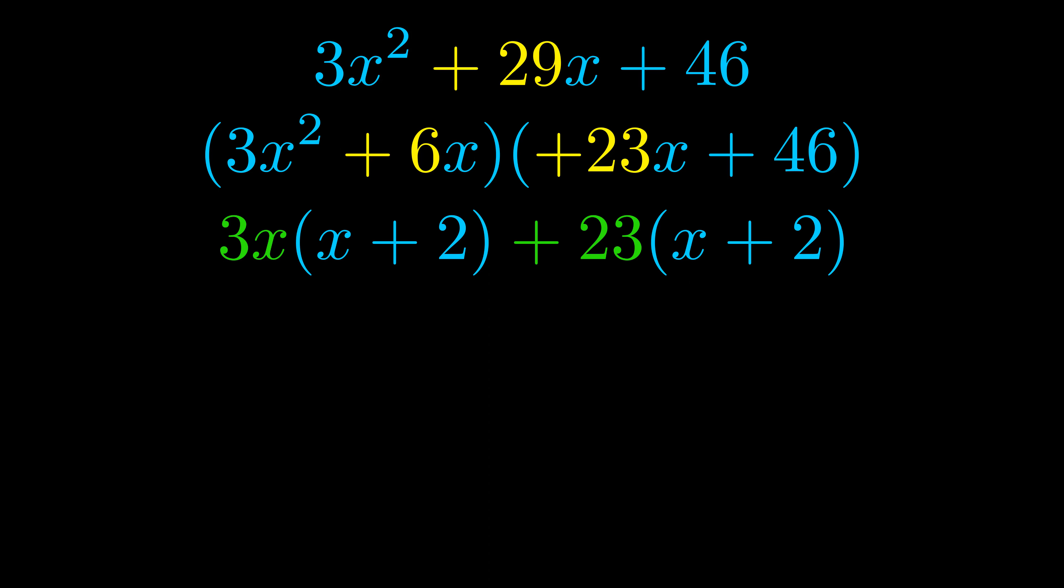Notice also how what remains inside of the parentheses is the same in both cases. The blue values are the same. Those blue values will become one of our factors and we will combine the two green values, the GCFs that we pulled out, to get the other one. And that is our fully factored equation.